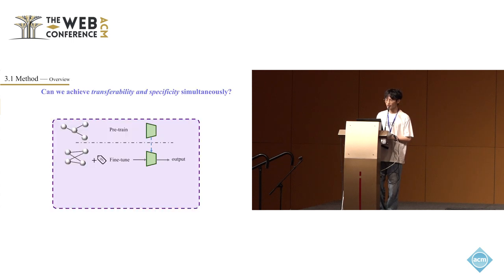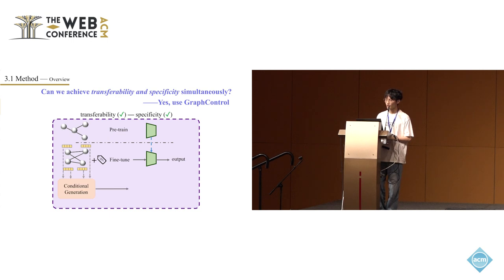To address these challenges, we introduce a novel module designed for the efficient deployment of pre-trained models on downstream datasets. Our module is compatible with current pre-trained models. It uses the transferable capabilities of pre-trained graph models and integrates target node attributes into these models, ensuring important details from the new data are included. This module consists of two components: a conditional generation module and a graph control module.